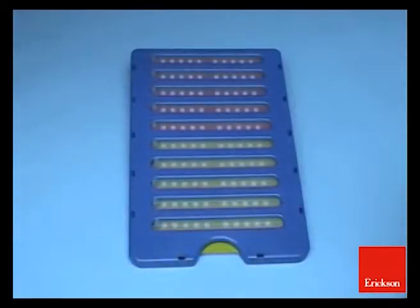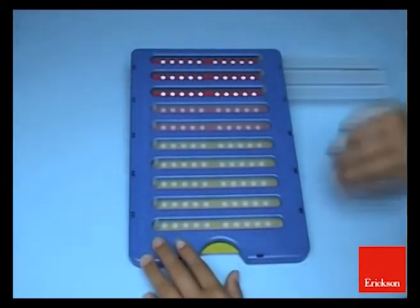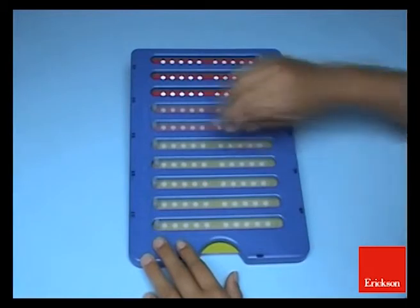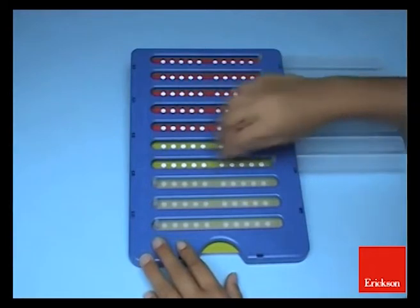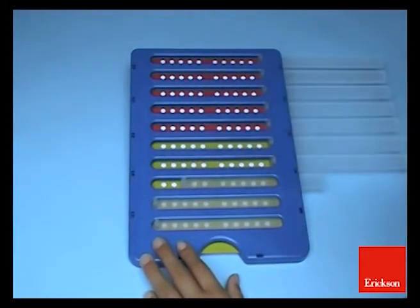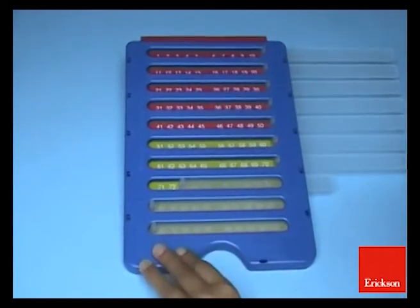Let's do 30 plus 30 plus 12. How many are they? 72. Check. Good.